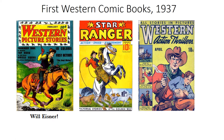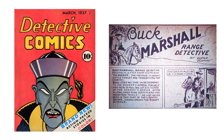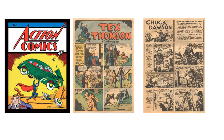Detective Comics was about detectives, with several different series starting with the first issue. One of those detectives from Detective Comics No. 1 was Buck Marshall, Range Detective, by Homer Fleming. The next really big comic book after Detective Comics was Action Comics in 1938, starring Superman, with several backup features, two of which were Westerns: Homer Fleming's Chuck Dawson and Bernard Bailey's Tex Thompson. Then in 1939, the first issue of Marvel Comics had five stories, and one of them was the Masked Raider, which was a Western. Westerns were part of the fabric of comic books from the very beginning.